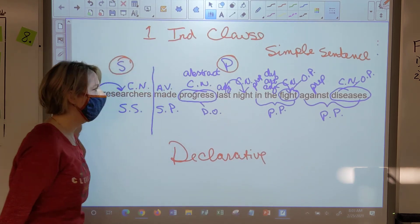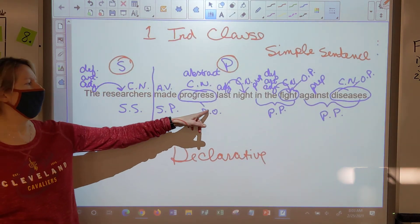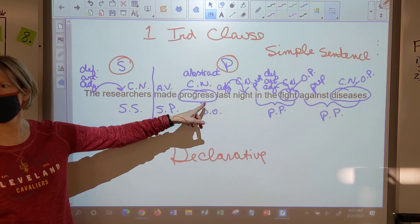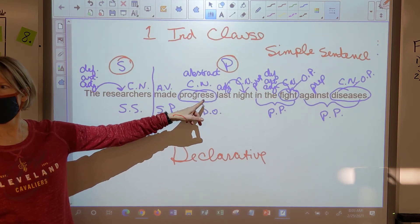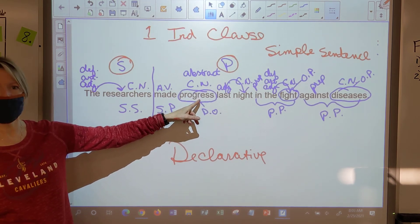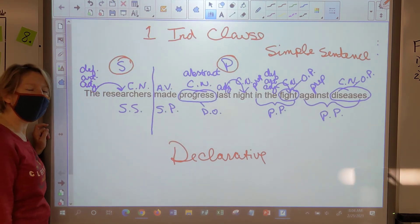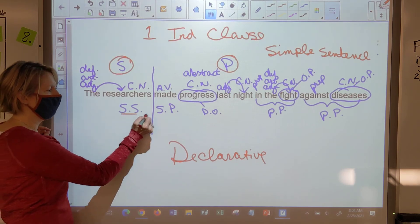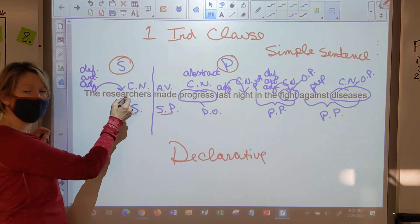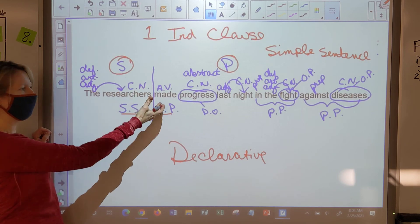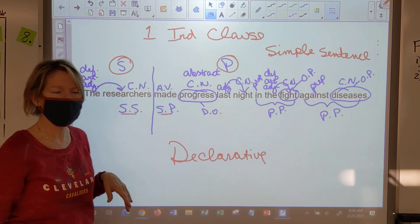And for our friends at home, real quick, who labeled this as the direct object? Gus. Gus, you did it as the direct object? How did you figure that out? Who or what did the researchers make? Who or what did SSSP, putting it into words, is who or what did the researchers make? They made progress. Very good.